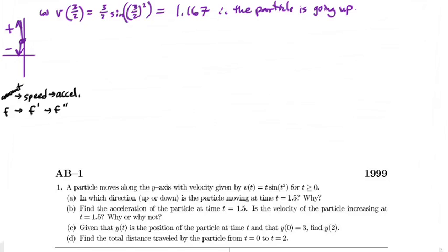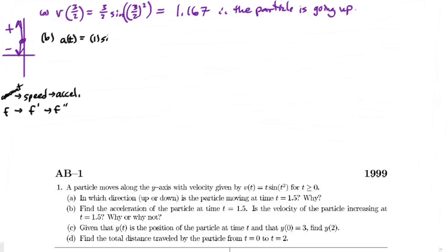So for part B, let's take the derivative of velocity to get acceleration: a(t) = derivative of v(t). Since t is multiplying sine of t squared, we have multiplication, so we need the product rule. The derivative of t is 1, multiplied by sine(t²), plus t times the derivative of sine(t²).